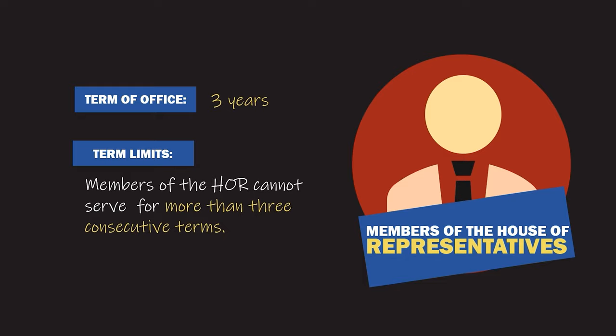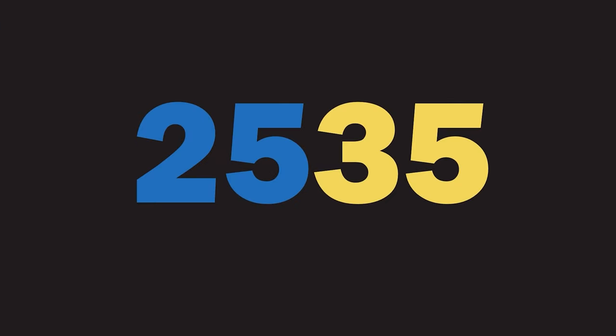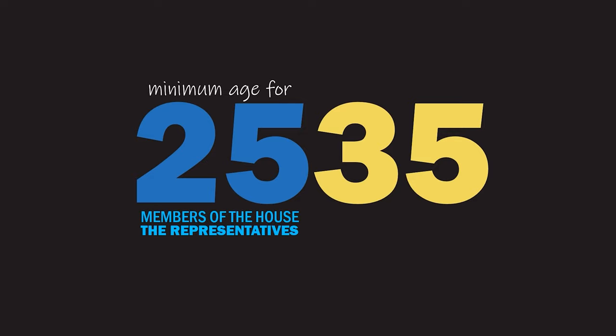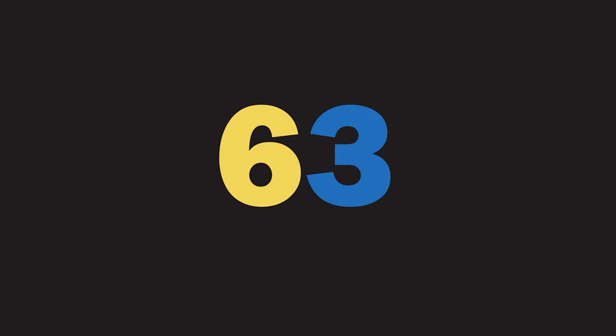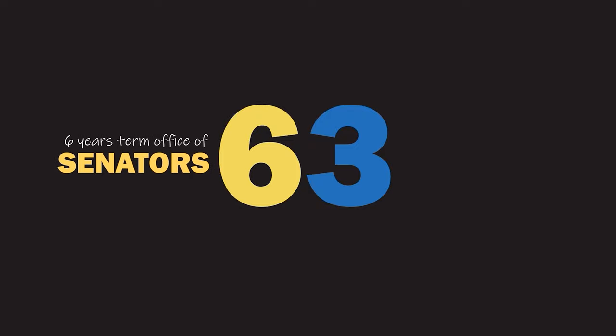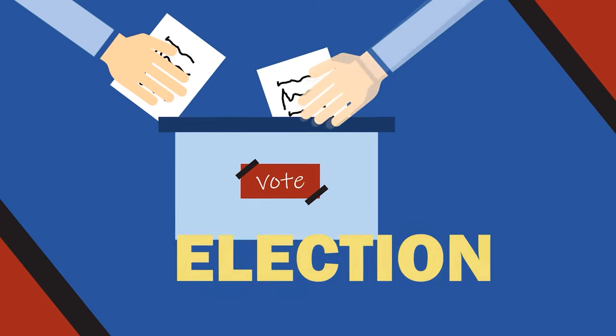Members of the House of Representatives cannot serve for more than three consecutive terms. Take note of these numbers: 25 is the minimum age of members of the House of Representatives, while 35 is the minimum age of senators. Also, 6 stands for the six-year term of senators, while 3 stands for the three-year term of House members.